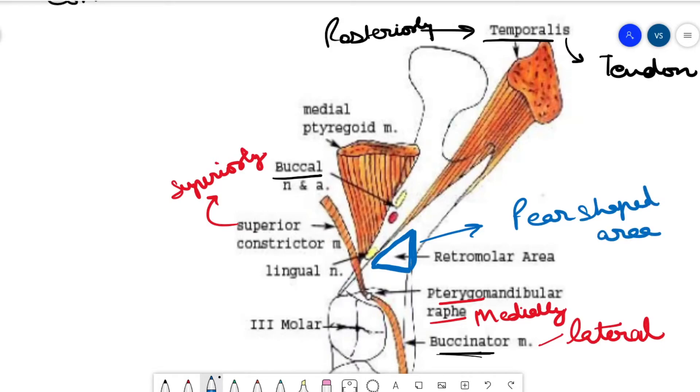By pear shape, the reference is the structure is narrower from one side and broader from the other.